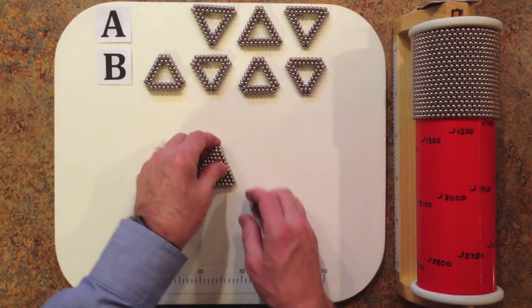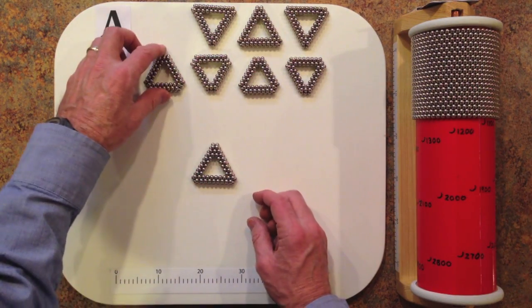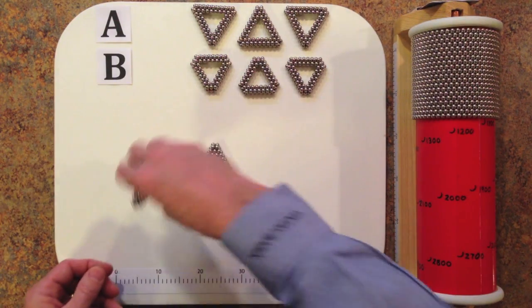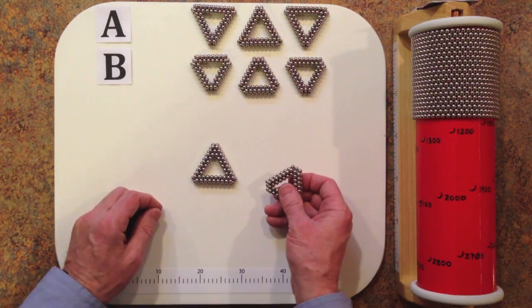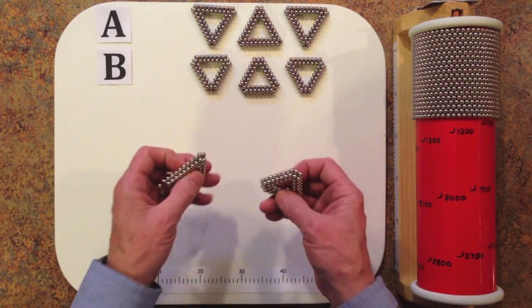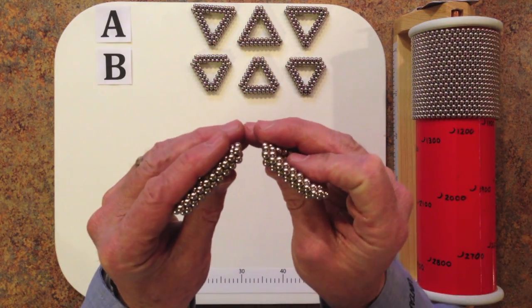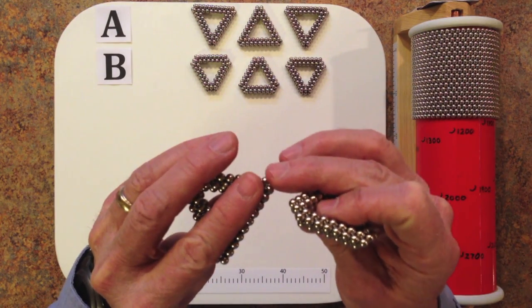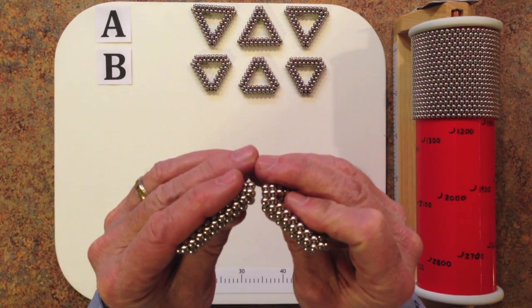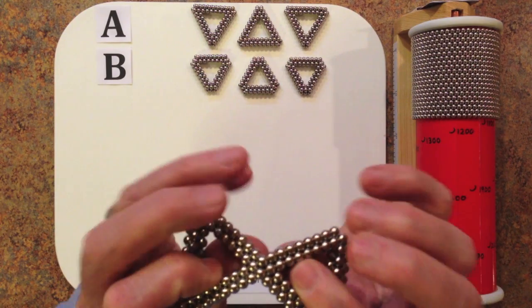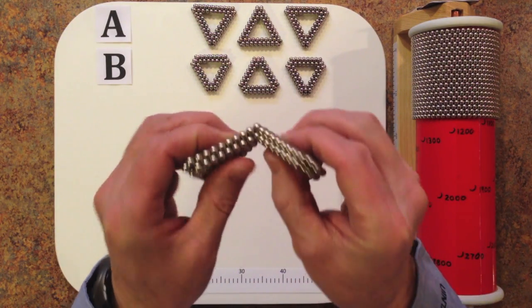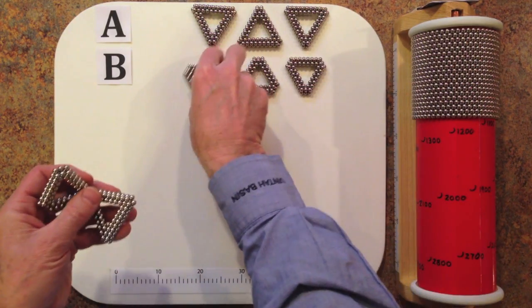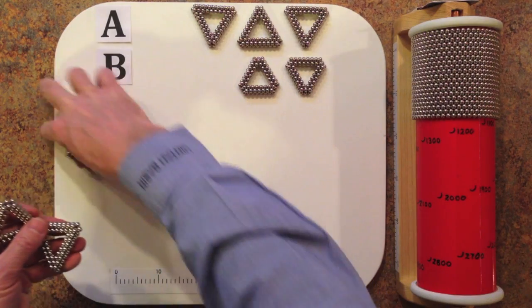So here's the A subunit that will form the bottom. Then I'm going to join three B subunits to the corners of this A subunit. The way that this is done is that they come together in such a way that these two magnets of the A form the edge of the corner. Do the same thing with two other B subunits.